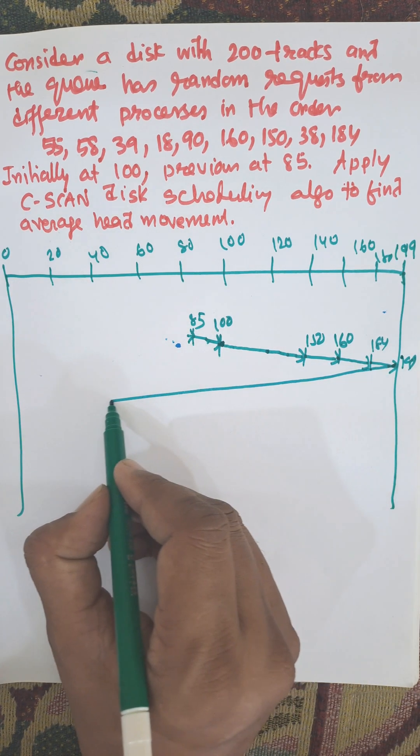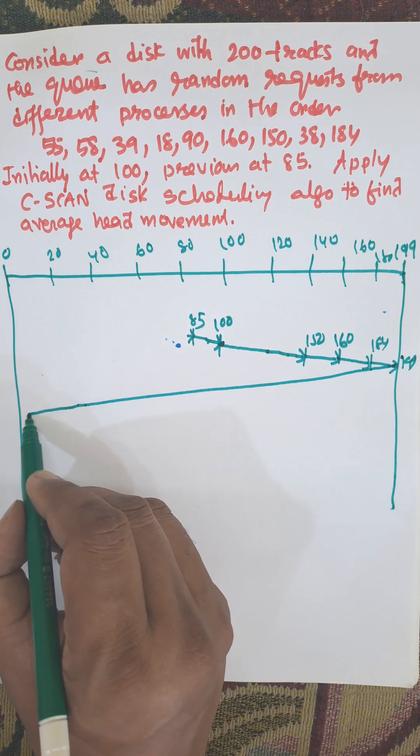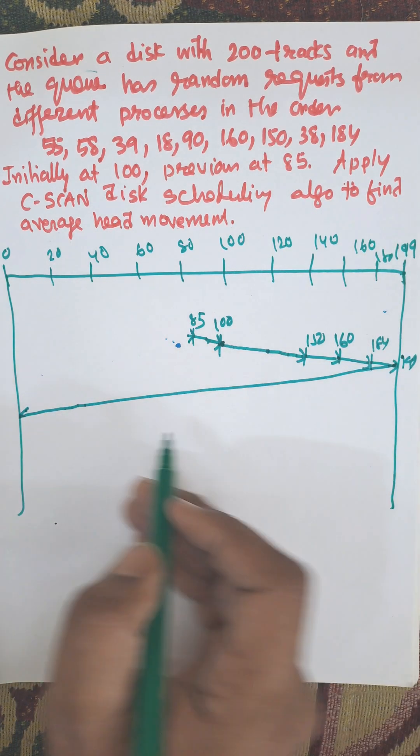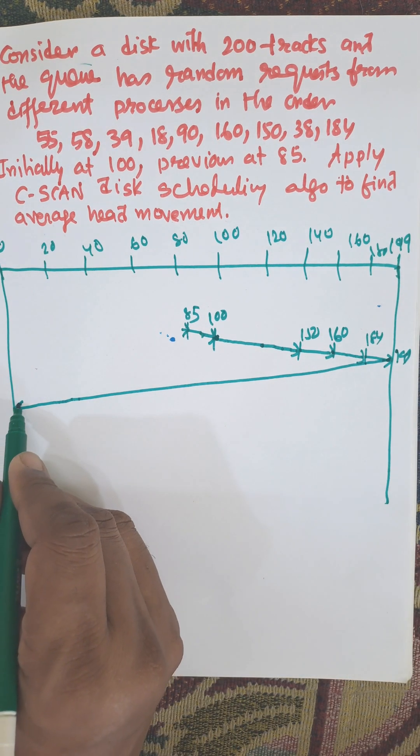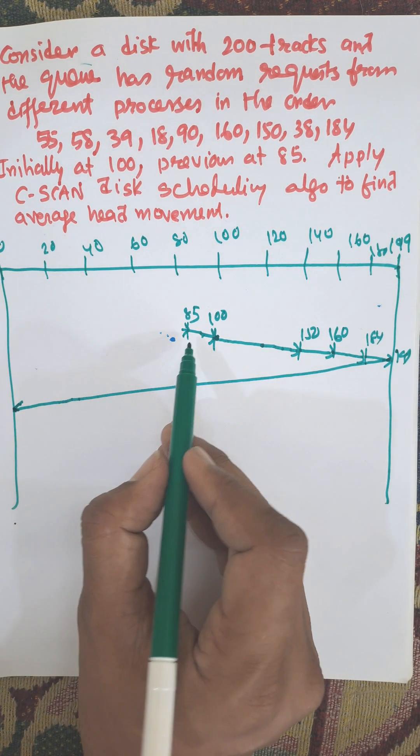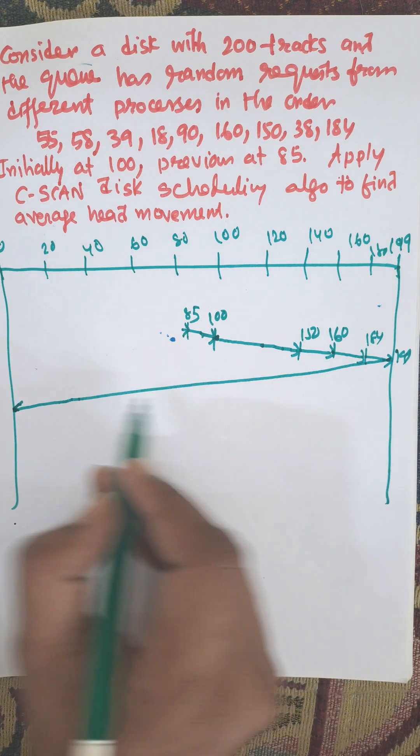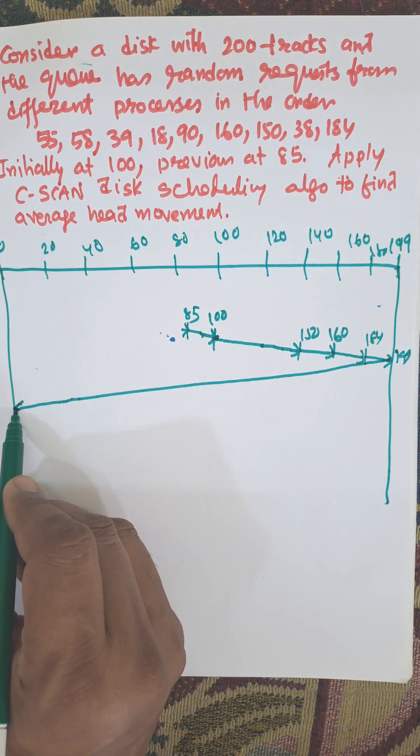From 199 to 0, why? Because during the returning we will not visit any track. Then it will return the circular way, that is towards the forward way. Then it moves toward the forward way.